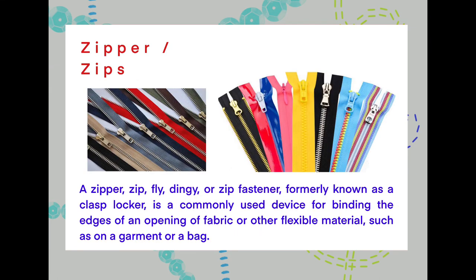Now let's move on to a zipper, sometimes known as a zip. A zipper, zip, fly, or zip fastener — formerly known as a clasp locker — is a commonly used device for binding the edges of an opening of fabric or other flexible material, such as on a garment or bag. Where is the most common place that we find zips? They're usually at the back of dresses or often on trousers. I've included lots of different types of zips ranging from different materials as well.